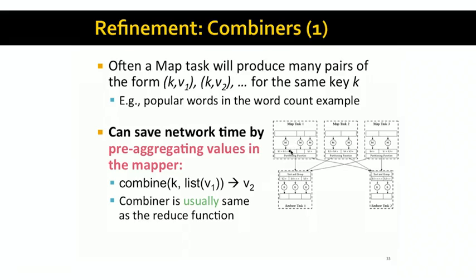The output of map task one will have, let's say, a thousand tuples with the key 'the' and the value one. All these tuples will have to be shipped over to, let's say, reduce task one. Shipping a thousand tuples over, all of whose keys are 'the' and all of whose values are one, is a lot of network overhead.